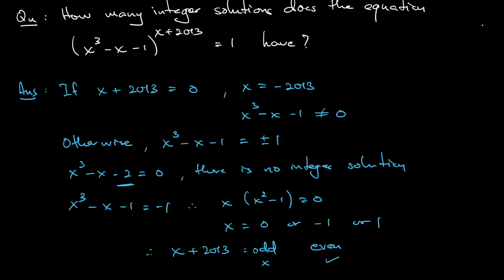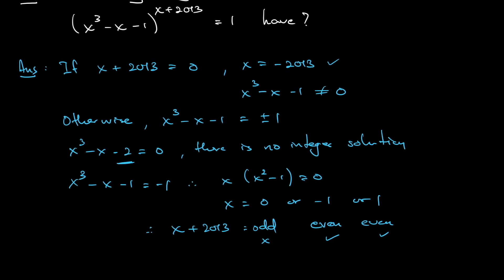I cannot take this. For x equals 1, that means this 2014 is even. So I can take this as well. So at first I have here. So that means in total I would have 3 roots, right? Hence 3 integer solutions.